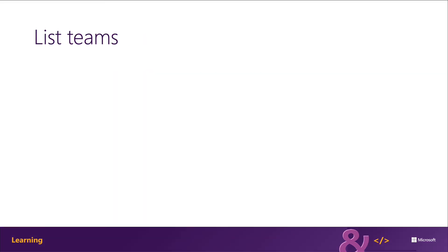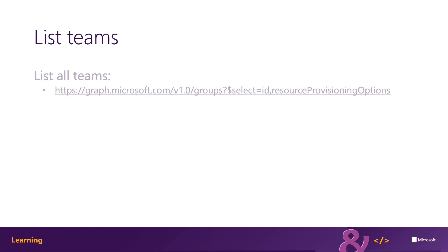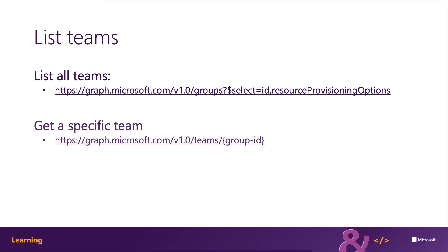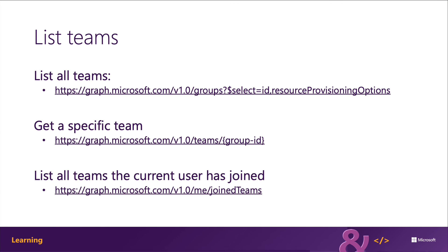Once the group has been created, convert it to a Microsoft team using the team's endpoint by submitting an HTTP POST that includes the ID of the Microsoft 365 group. To list all the teams in an organization or tenant, find all the groups that have teams and get the information for each team. Get a list of all groups and find the ones that have the resource provisioning options property containing a team. Groups are very large objects, so you may want to use the select query parameter to only get the properties you care about. Keep in mind that a team has two kinds of IDs: the group ID is in the format of a GUID, while the team ID can be in the format of a Skype ID such as 19:someID@thread.skype. You can also get a list of all the teams a current user has joined using Microsoft Graph.